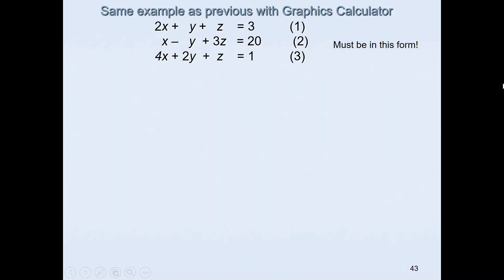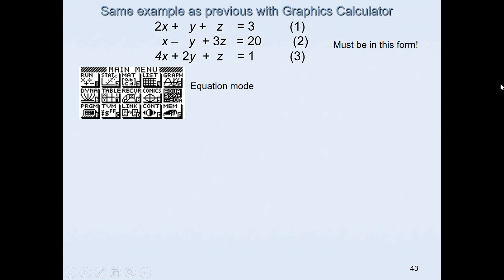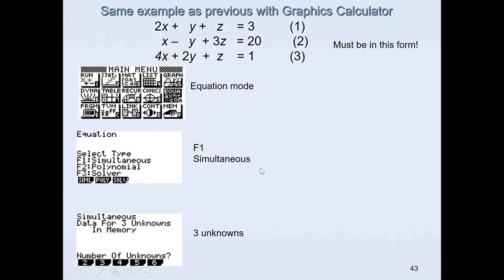So here's a quick summary how to use the graphics calculator. You select the equation mode then you hit F1 to get simultaneous. Once you've got the simultaneous pick three unknowns.